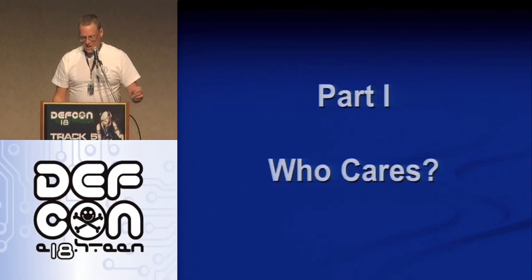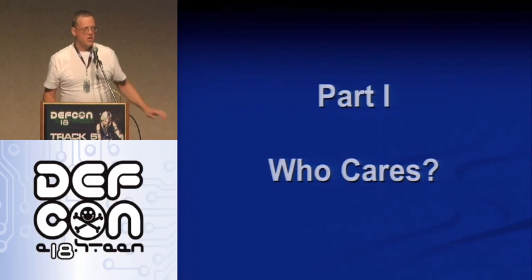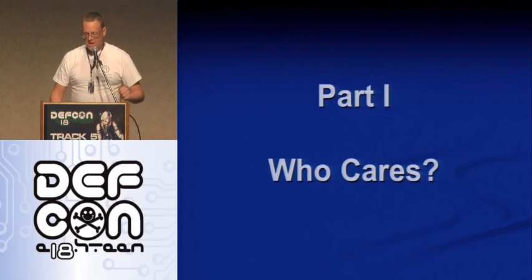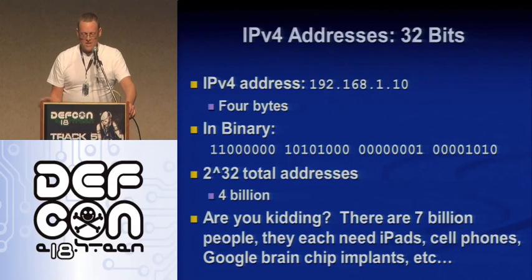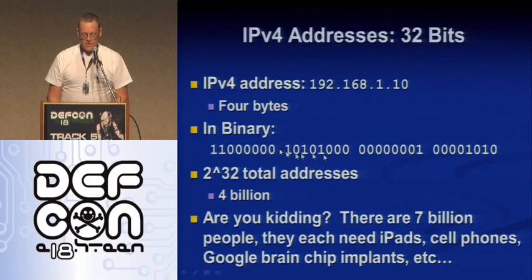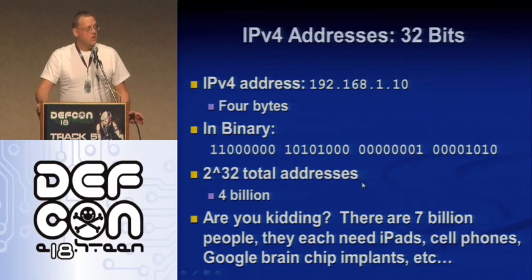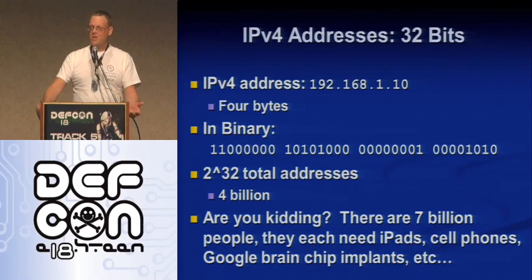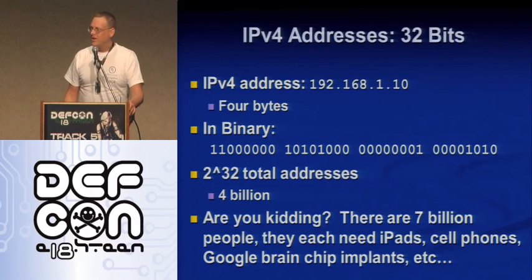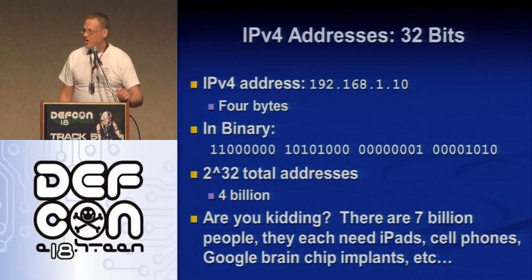I'm Sam Bowne; I teach at City College San Francisco, and everything — my talk and all my stuff — is always available on the web for anybody to use. So let me show you why I care. IP version 4: we've all seen these addresses like 192.168.1.10. In binary, that's a 32-bit binary number, and there are only 2 to the 32 of them — that's only 4 billion. And that's ridiculous, right? There are 7 billion people, and how many devices do you have on your body right now that need an IP address? There's no way 4 billion is ever going to cut it.